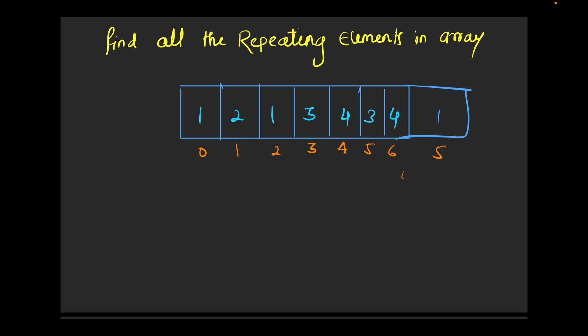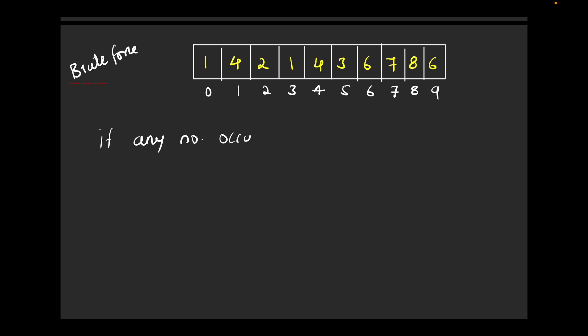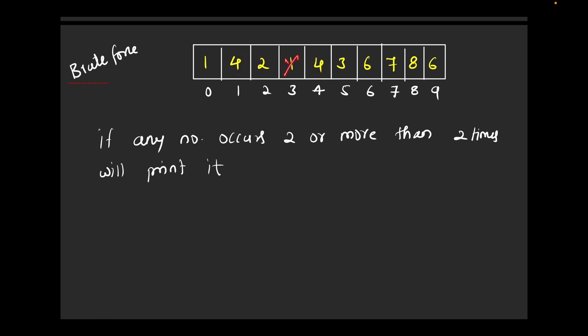I hope you understood the question. Now let's look at the brute force solution. If I am standing at element one, I will check if there is any one present to the right of it. If any number occurs two or more times, we simply print it. For example, one occurred two times — print one. Four occurred two times — print four. Two occurred only once — don't print. Six occurred two times — print six. Seven and eight occurred only once — ignore them.